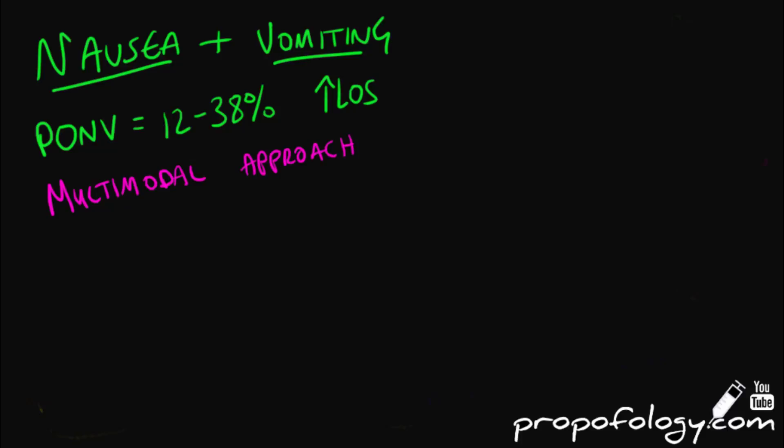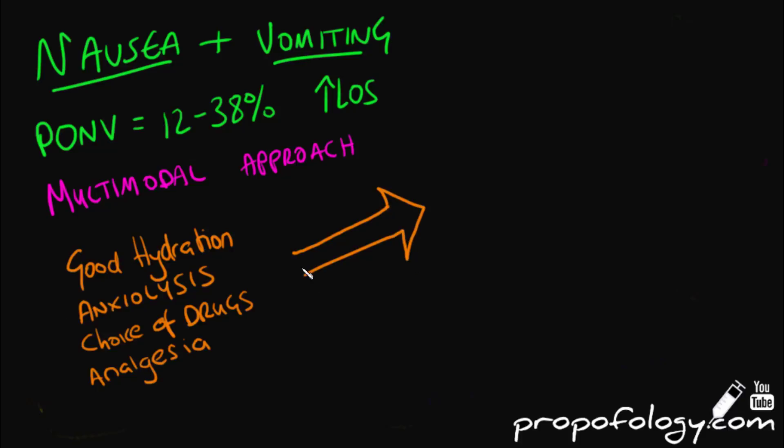Before we look at the different antiemetics, let's see what else you can do to improve the chances of making a patient less nauseous. You can ensure good hydration, anxiolysis with appropriate medications, select your anesthetic drugs carefully to minimize the use of volatile gases or nitrous oxide. You could use a total intravenous anesthetic like propofol, for example, and ensure good post-op analgesia as pain is very emetogenic.